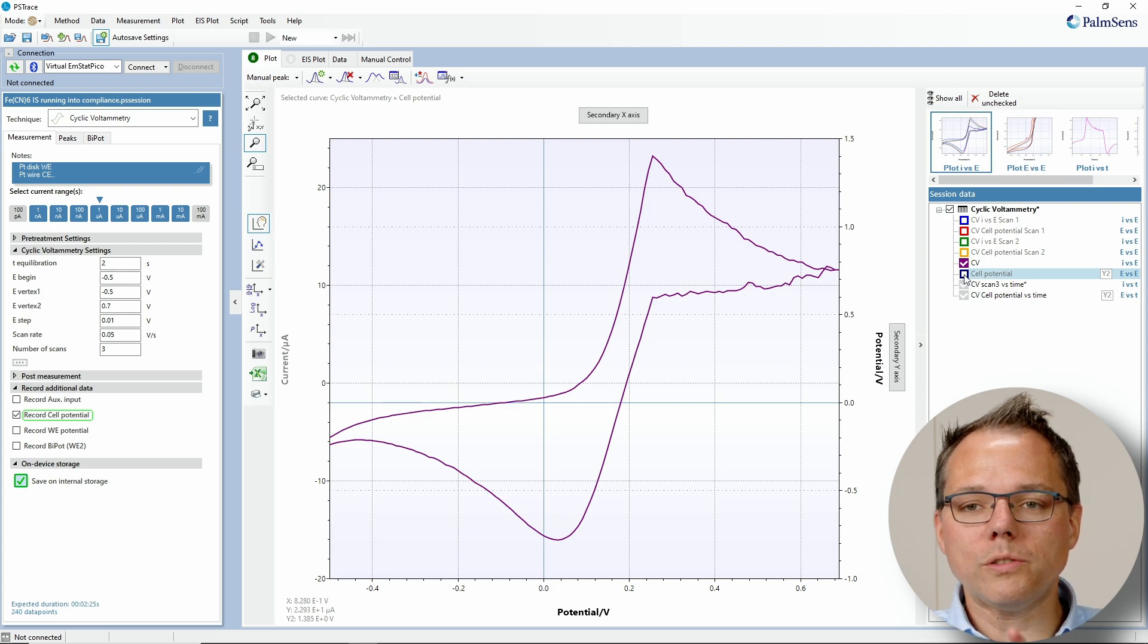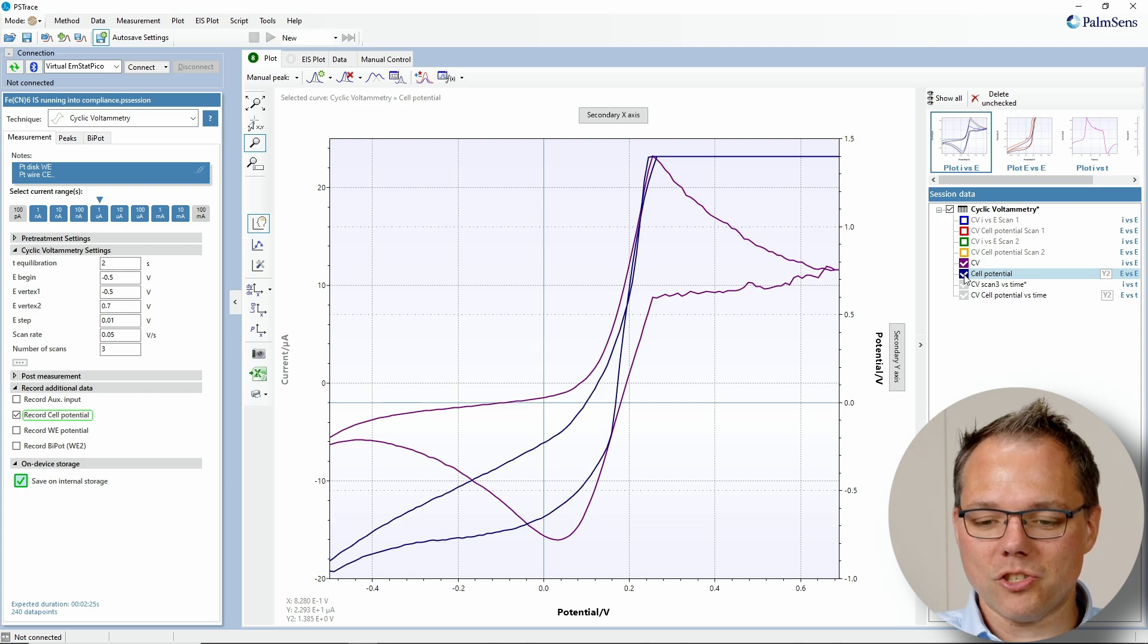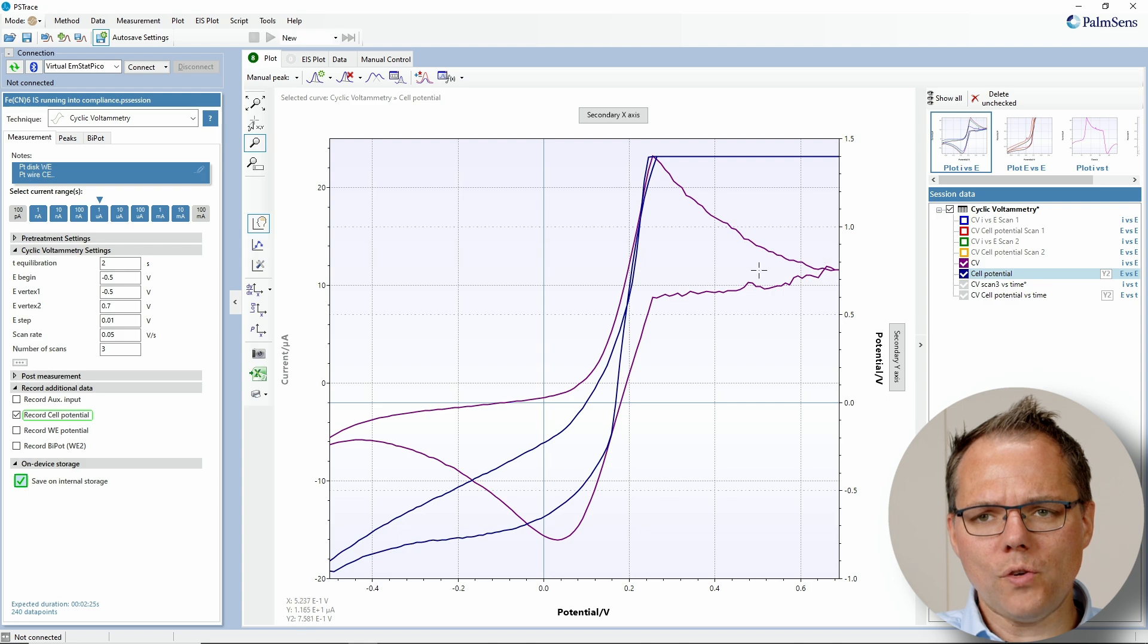So when I now also put in the same graph the cell potential, you see that at the same point where I have this very sharp peak, I get suddenly a flat line. I've reached the maximum cell potential that I can apply. Why does now the curve look this way?